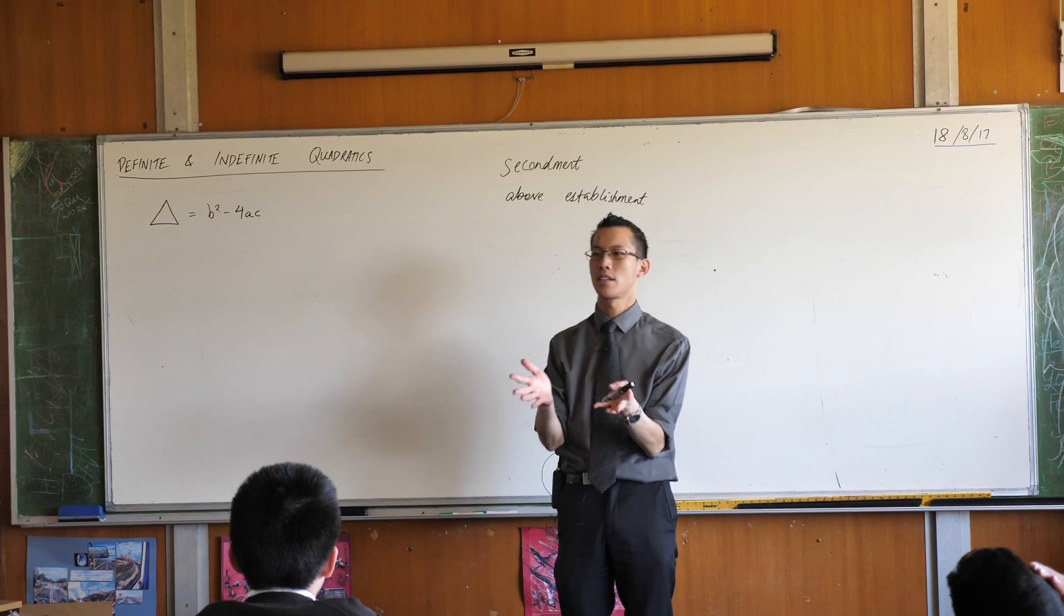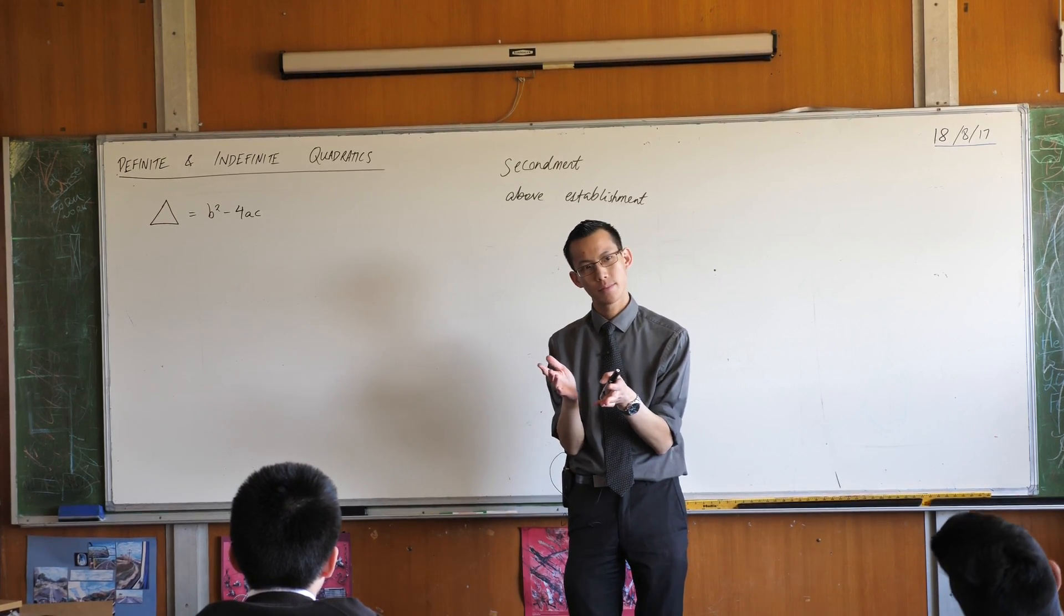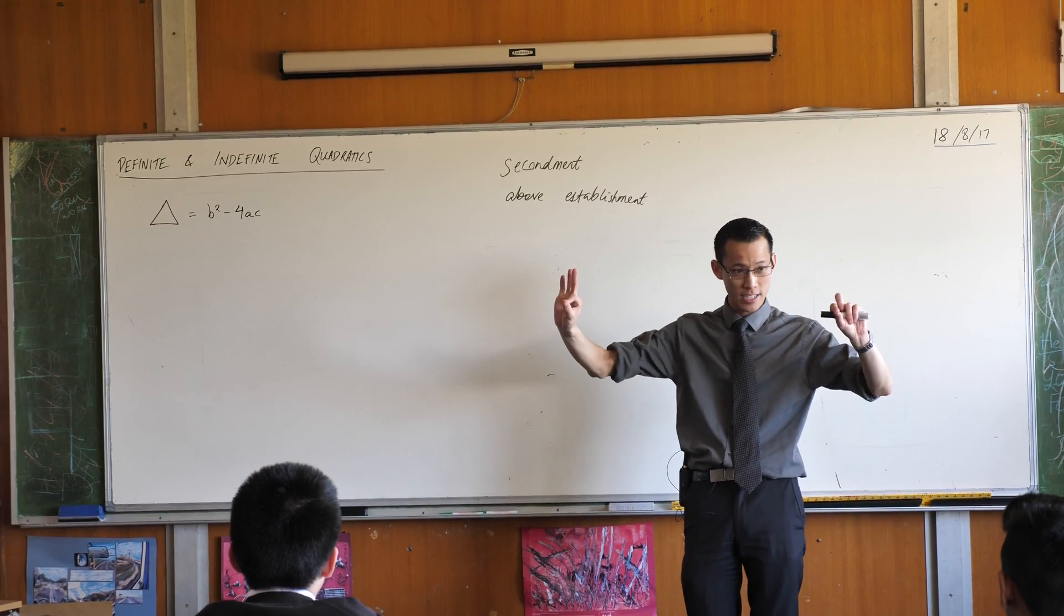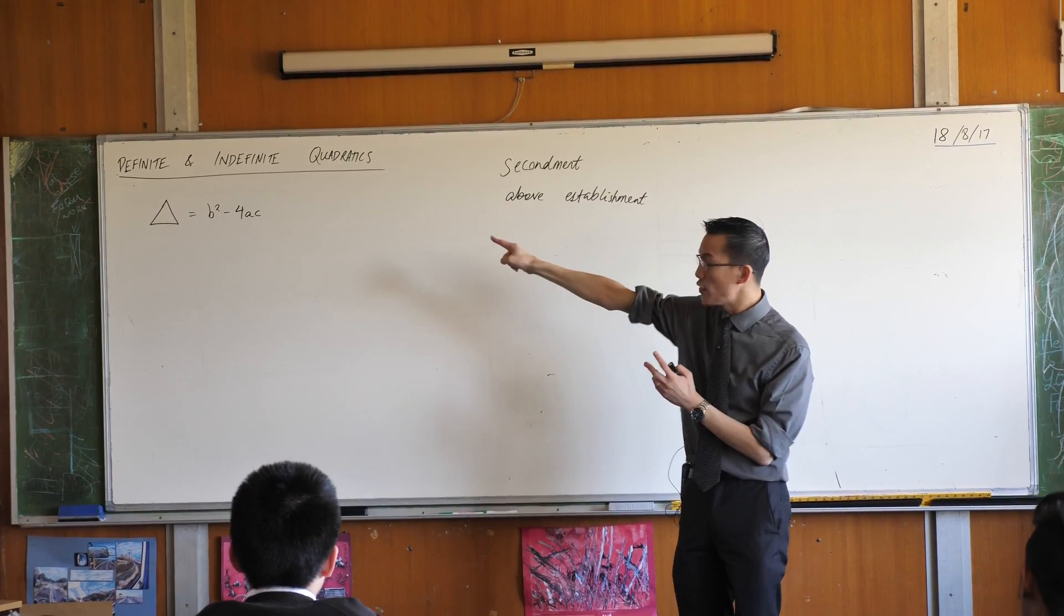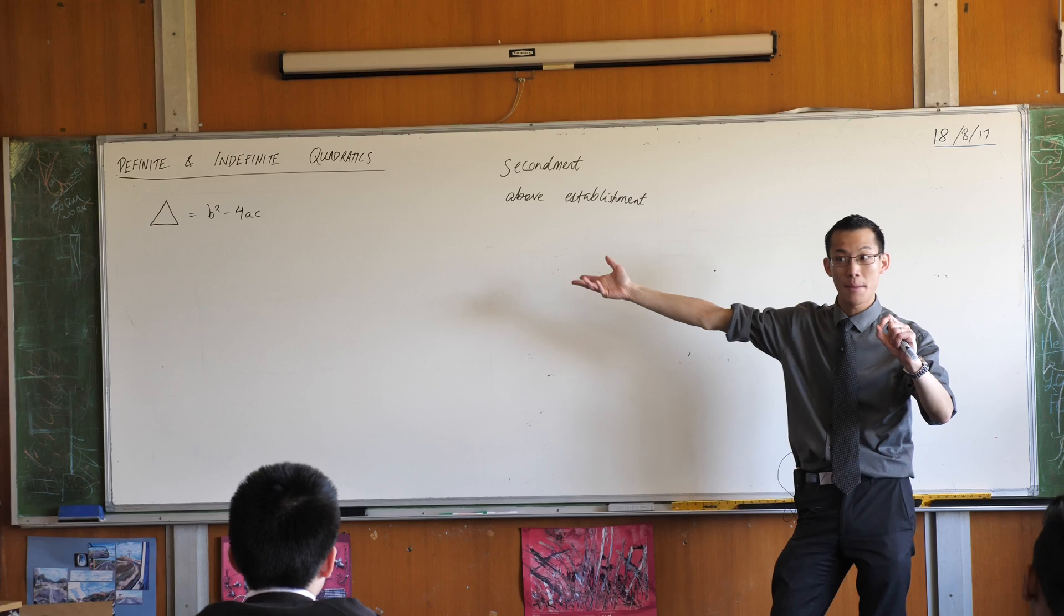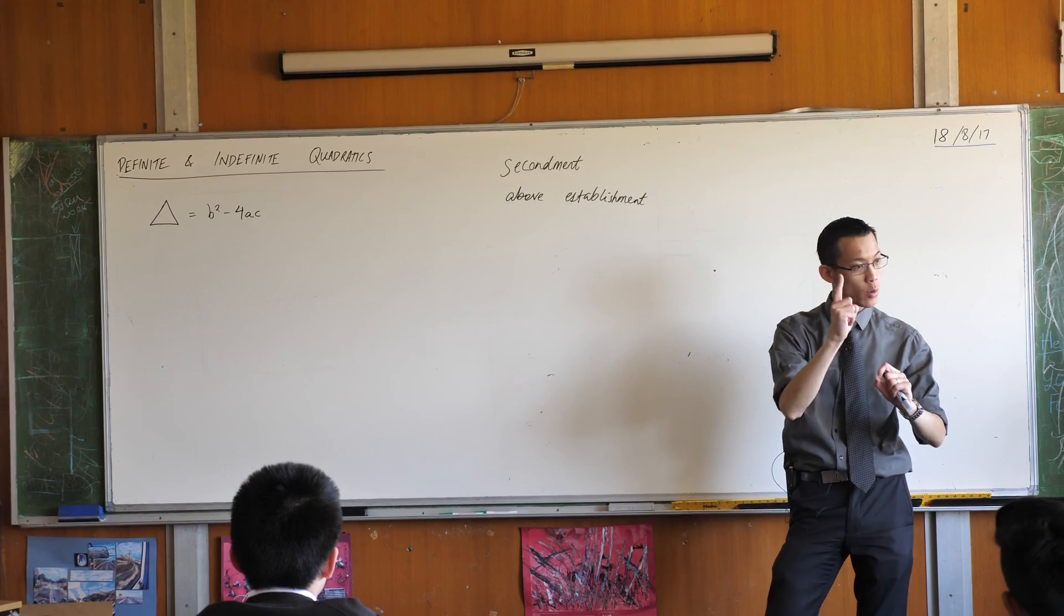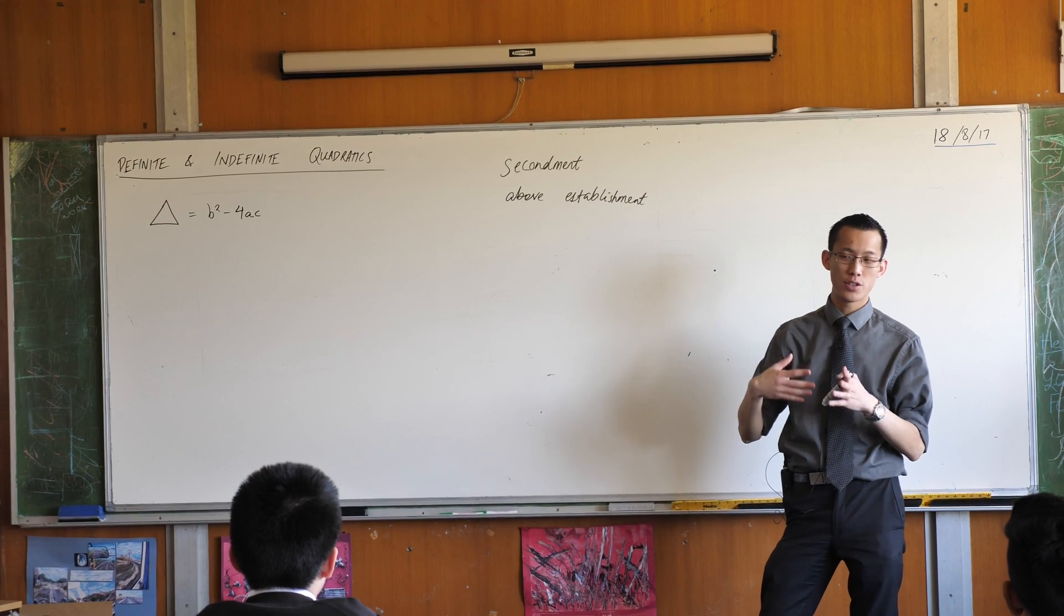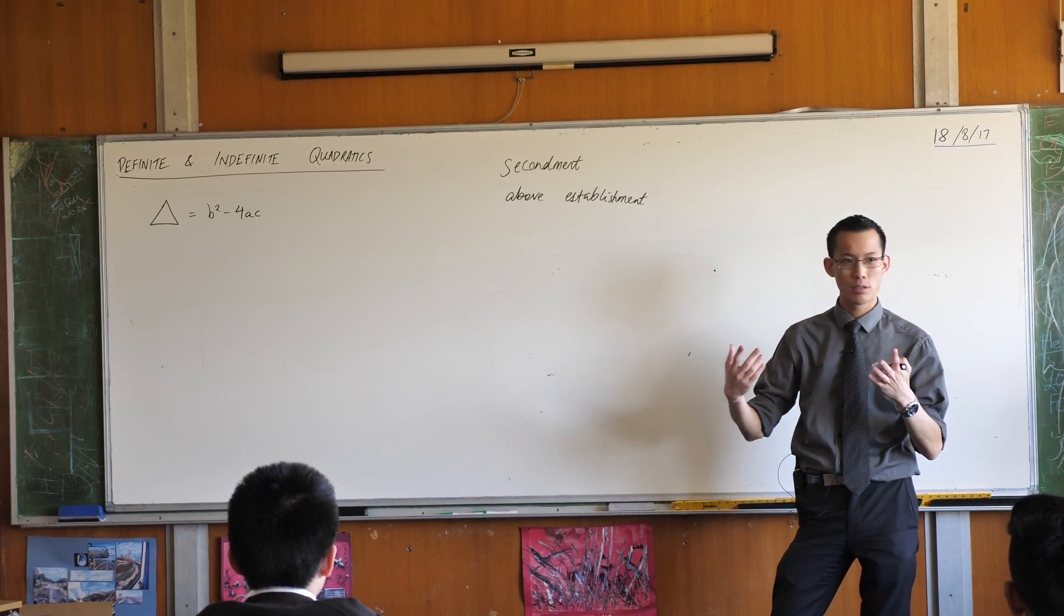If the discriminant is positive, what does that tell you about the quadratic? It's got two roots, very good. Or you could say it's got distinct real roots. If the discriminant is exactly zero, what does that mean? One root or two equal roots. And if on the other hand the discriminant is negative, that means no roots.